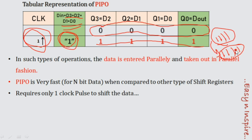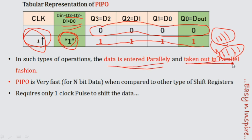So input and output are equal — the data is stored and shifted. The data is entered parallelly as parallel input and output is taken parallelly as parallel output. The parallel input parallel output shift register is completed.